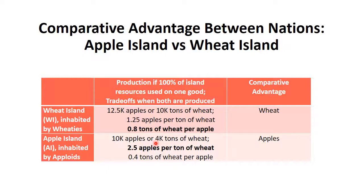If we think about the tradeoffs between apples and wheat production for each country — imagining they don't specialize but produce both and face a linear tradeoff — Wheat Island has to give up 1.25 apples to get an additional ton of wheat, whereas Apple Island has to give up more: 2.5 apples to get an extra ton of wheat. We can also think about how much wheat each country gives up for an additional apple. Wheat Island gives up 0.8 tons of wheat per apple, while Apple Island gives up only 0.4 tons of wheat per apple.